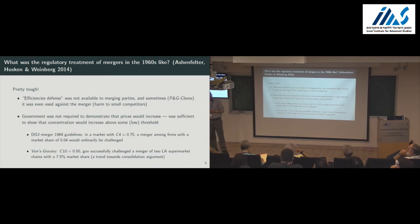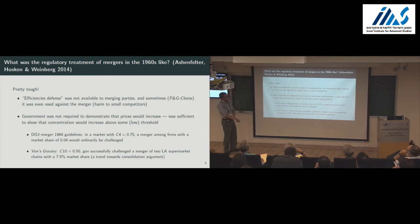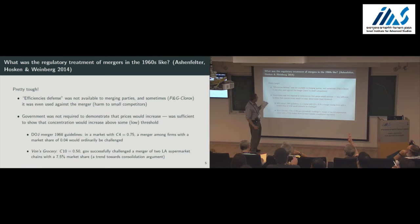Sometimes efficiencies were actually used to attack the merger. In the Procter & Gamble Clorox case, the claim by the government was that the merger would create a very efficient entity, which would be to the detriment of small players. So it was really tough to defend mergers, especially with this efficiency defense. The government was not required to demonstrate that prices would increase or that welfare would be impaired in any way, but they were required to show that concentration would increase within a well-defined market beyond a certain threshold that was fairly low.